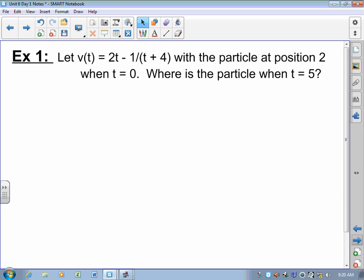First things first. We're going to have some particle traveling. We're going to let v(t) equal 2t minus 1 over t plus 4. The particle is going to be at position 2 when time is 0. I want to know where the particle is when time is 5.